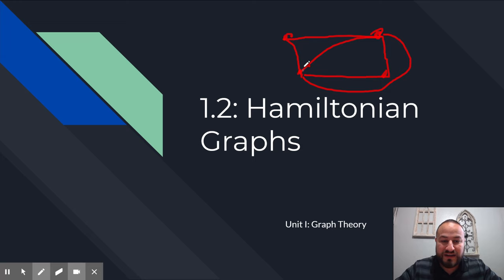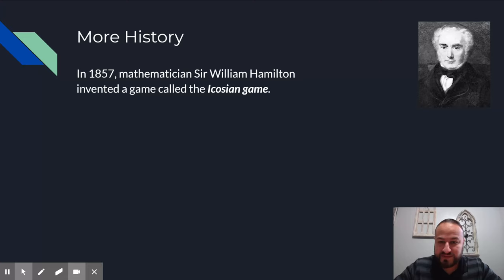And last week we tried to find ways to get through every edge exactly once. And we're going to do something a little similar today, but slightly a little bit different. So I want to start out with what we did during class today. We started with a little history lesson. We have a new mathematician here who came up with this game called the Icosian game.